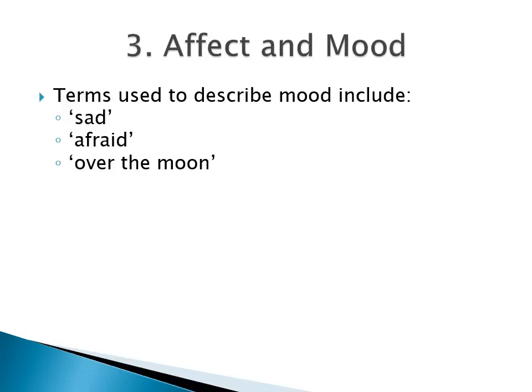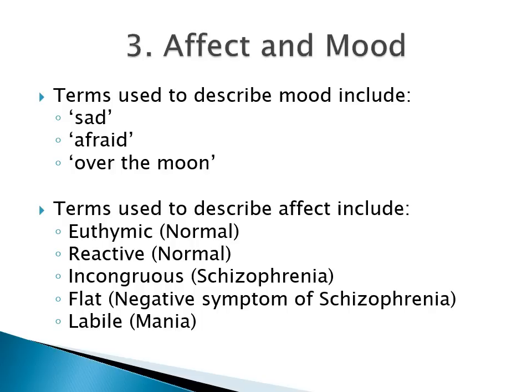Some terms used to describe mood — and these are terms that the patient might use — include being sad, which might reflect underlying depression; being afraid, which might reflect an underlying paranoid fear or anxiety disorder; and being over the moon, where if they are abnormally happy or elated, this might reflect an underlying mania.